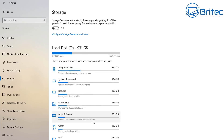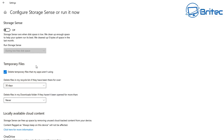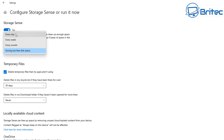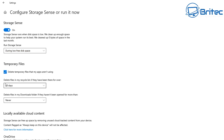Let's go ahead and configure Storage Sense. Go to 'Configure Storage Sense or Run It Now' and you can toggle Storage Sense on. You can set it to only run during low disk space, or schedule it to run every day, every week, or every month. You can also set it to delete files in the Recycle Bin if they've been there over 30 days.